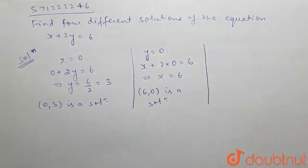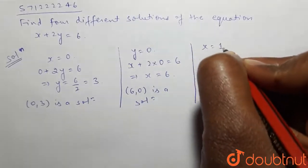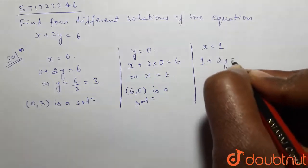Now to find the third solution, let's put x equals to 1. Then the equation will be 1 plus 2y equals to 6.